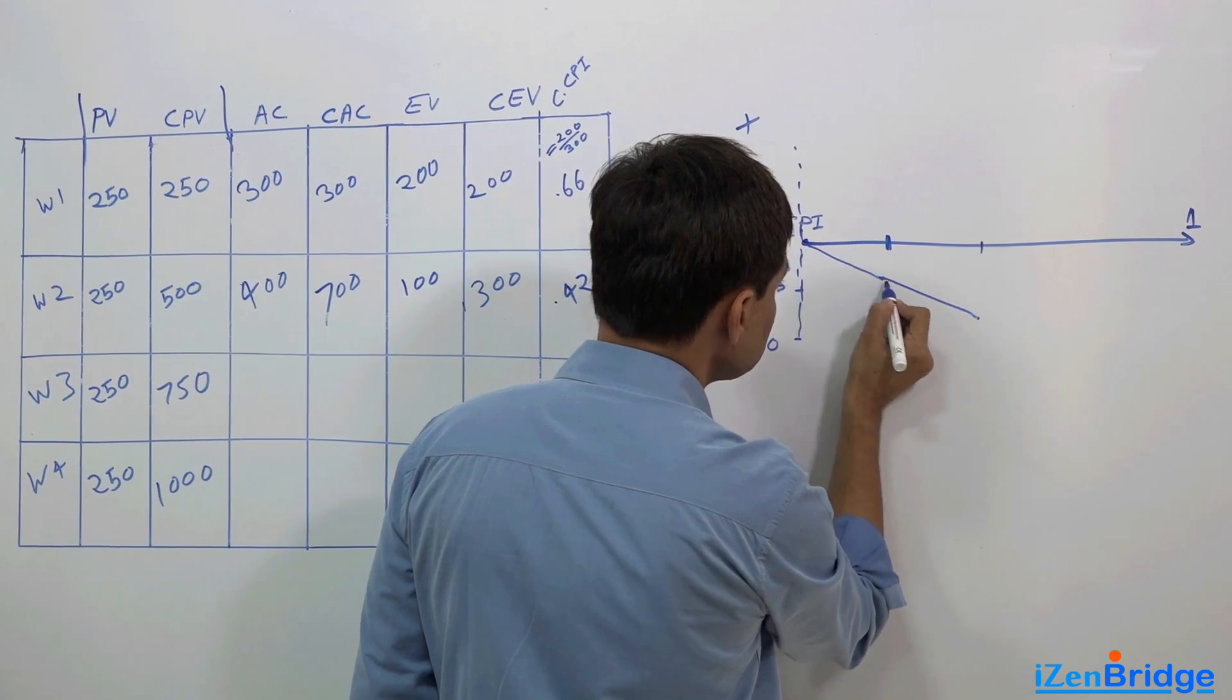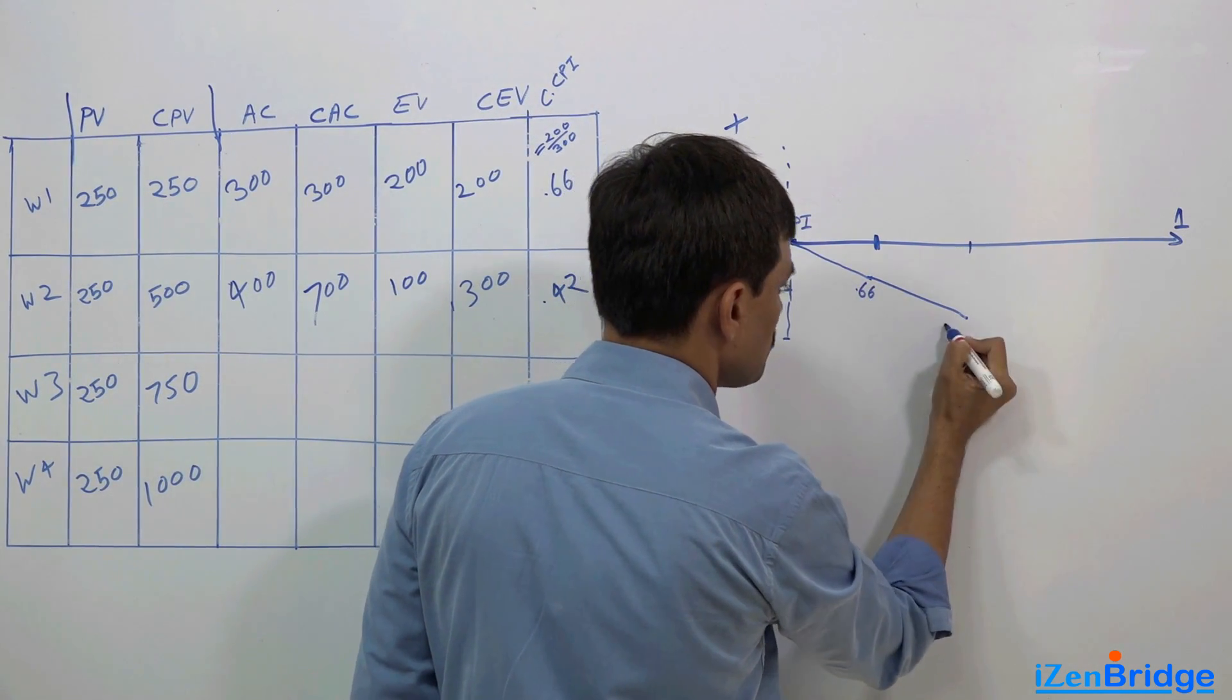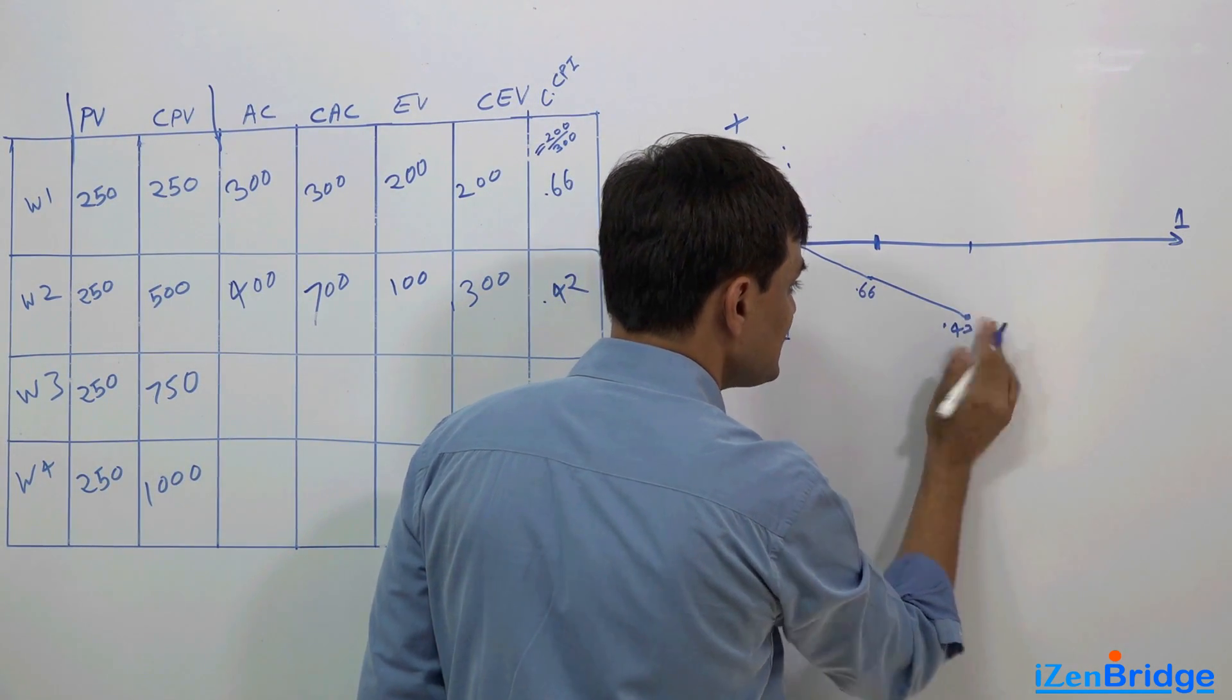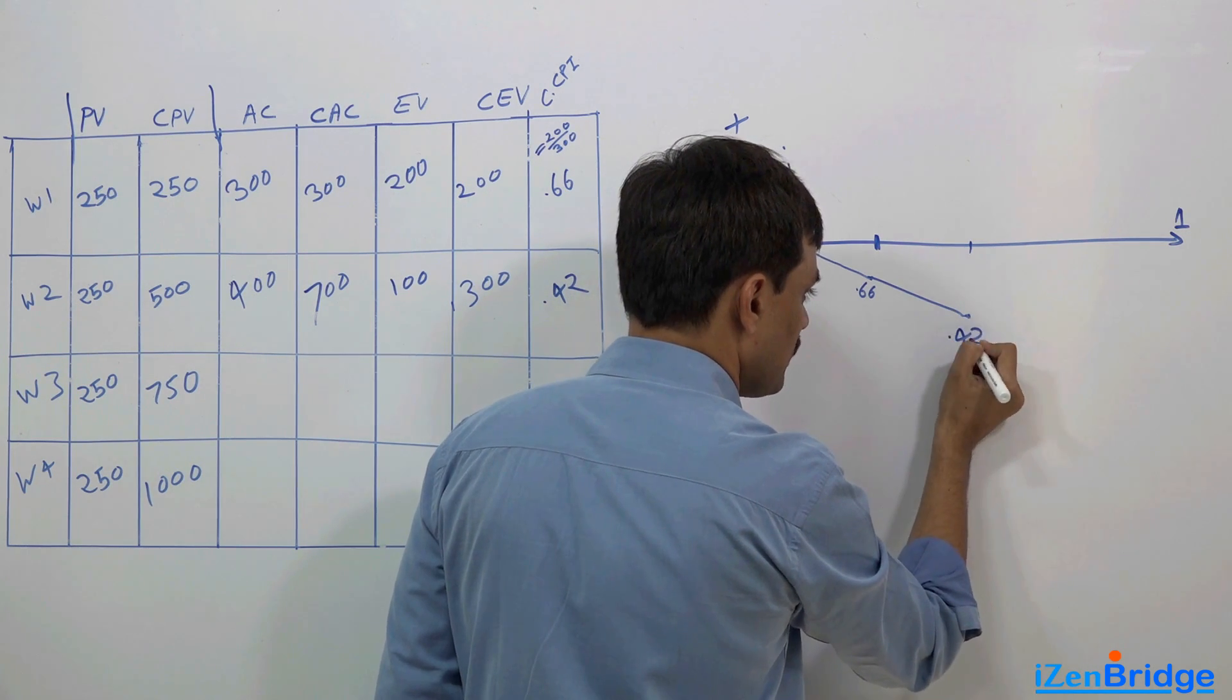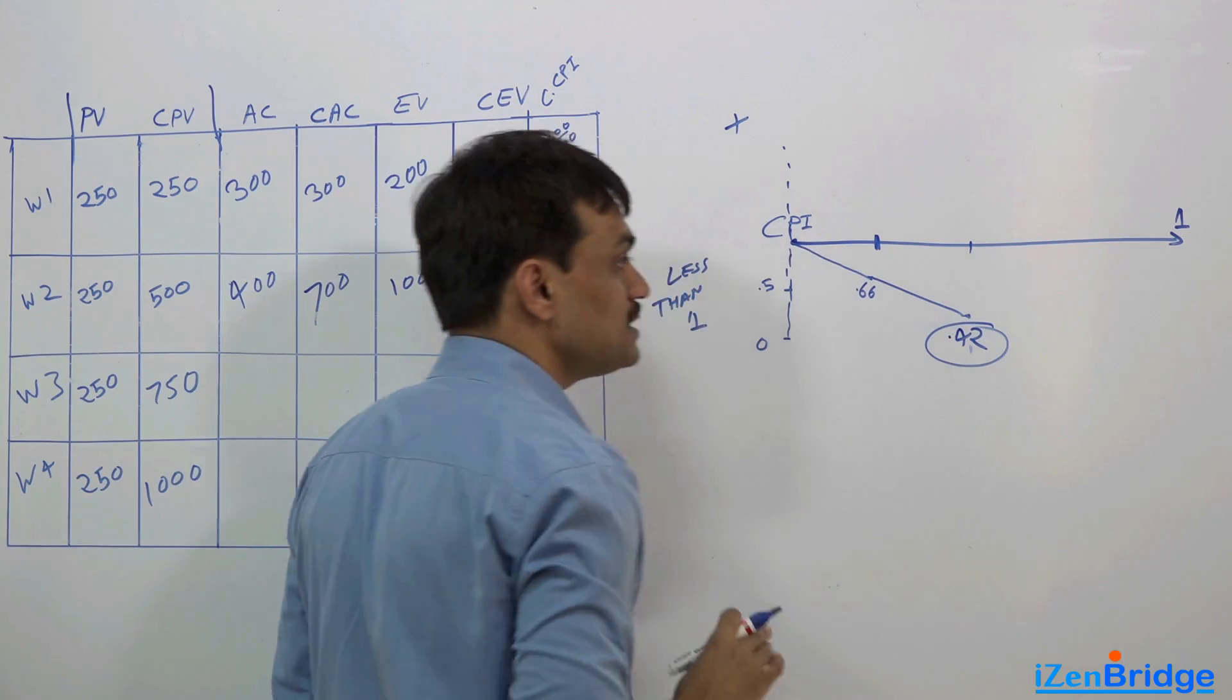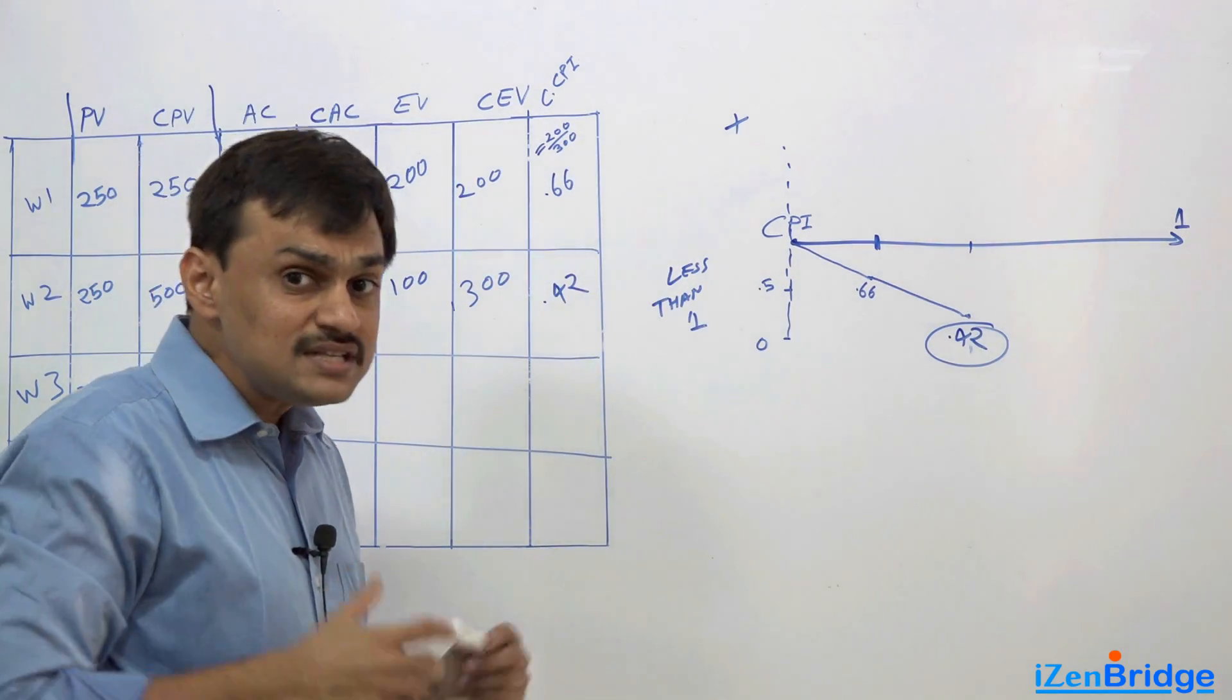So cumulative, this is my 0.66, 0.42. And here I stand. Here am I. And we have not spoken about To Complete Performance Index till now. Here we are.